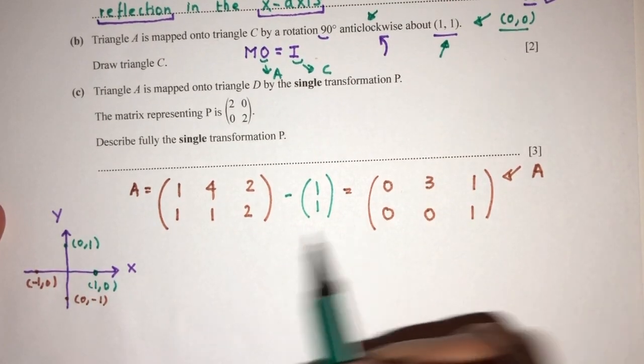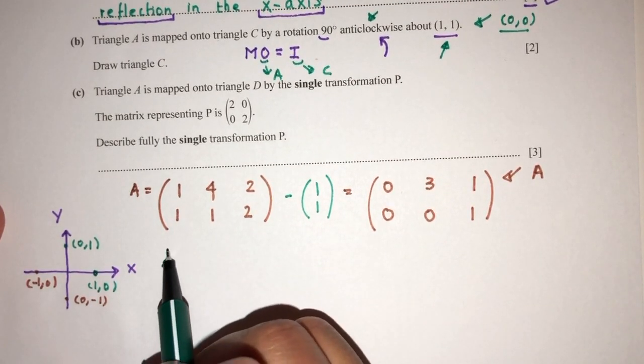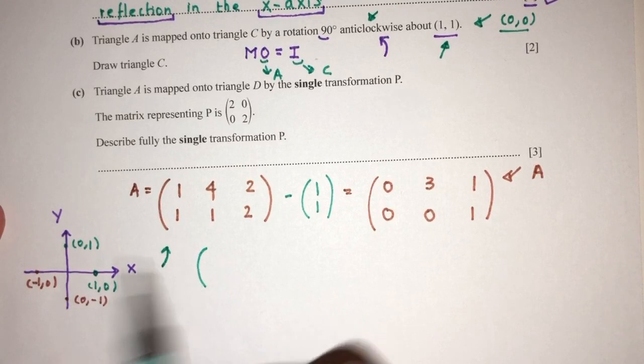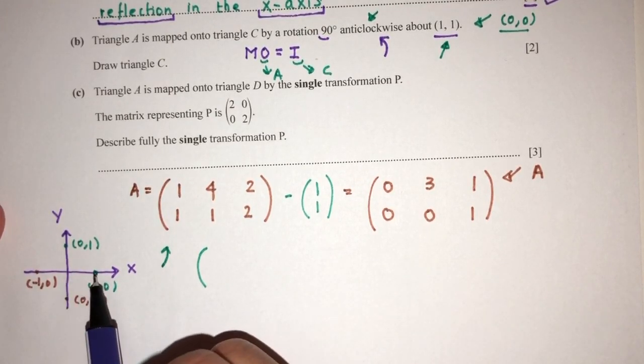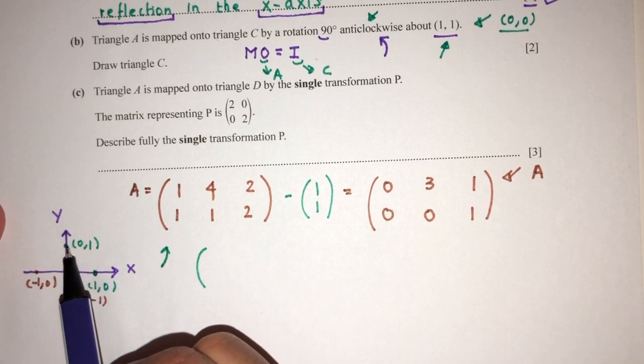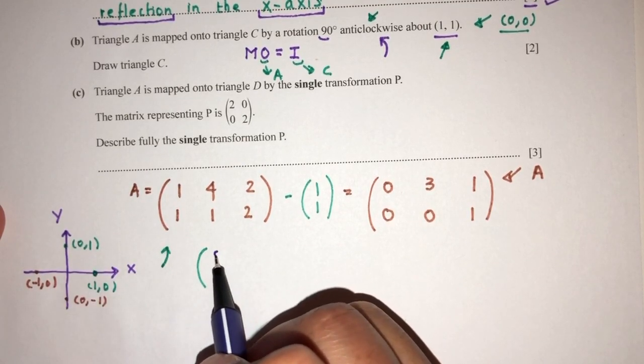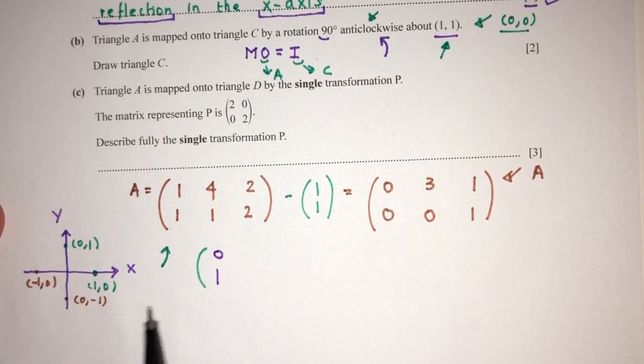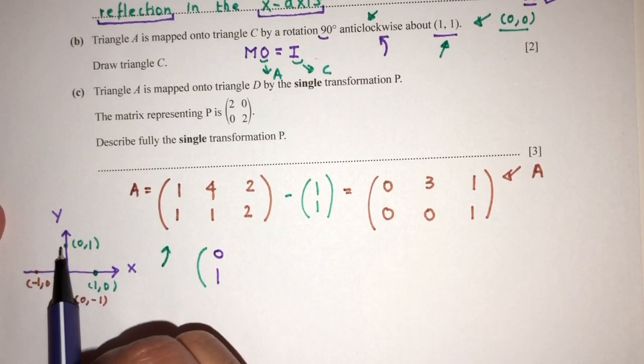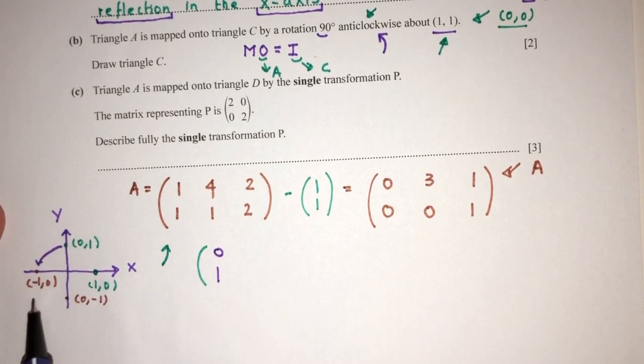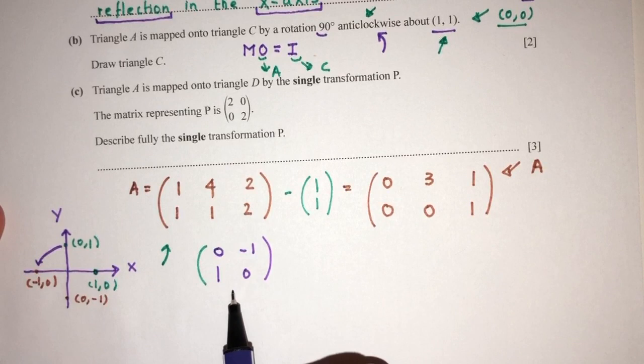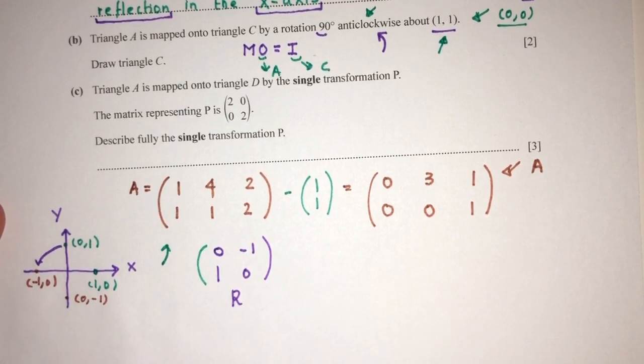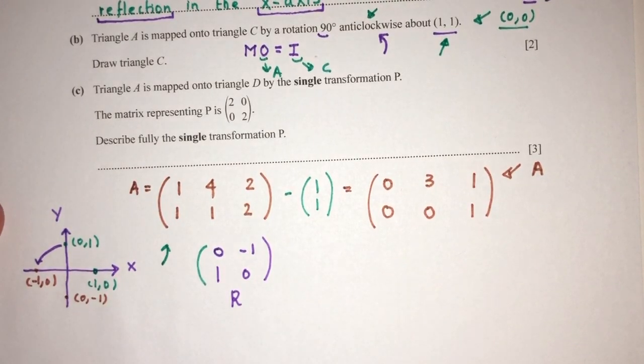So now, anticlockwise will be in this direction, right? So let's find the matrix. So first, we begin with this point. Now, if you rotate this anticlockwise 90, this will become this point. So this is my resulting point. Now, we look at this one. If you rotate anticlockwise 90, you become this point. That will be my resulting point. So this matrix right here represents rotation of 90 degrees anticlockwise.